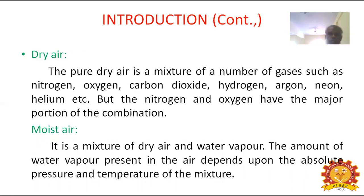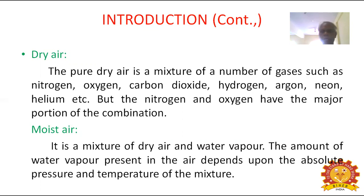Now we are going to see what is dry air and what is moist air. Pure dry air is a mixture of a number of gases, such as nitrogen, oxygen, carbon dioxide, hydrogen, argon, neon, helium, etc. But nitrogen and oxygen have the major portion of the combination.